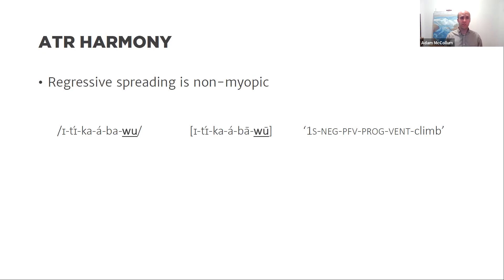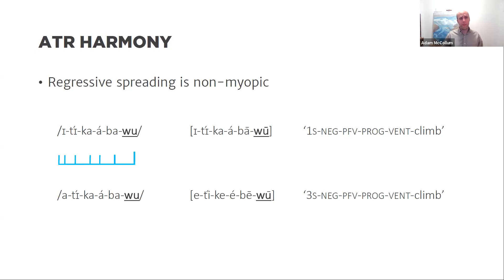To summarize: regressive ATR spreading in Tutrugbu is non-myopic. The realization of harmony on a prefix like /ba/ depends not just on /ba/ and the immediately preceding element — you need to know what precedes /ba/ at a distance of one, two, three, or four syllables, and you need to know whether that element is at the left edge of the word. This is an incredibly non-local dependency. When the third singular prefix is present, harmony obtains throughout the word; when a plus-high prefix is there, harmony is blocked by the low vowel.